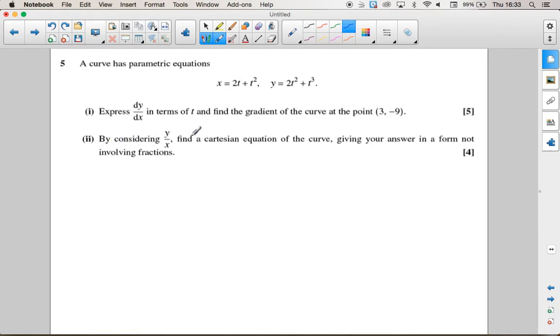So part 2, a different part of the question, says that by considering y over x, and we're looking for the Cartesian equation. Normally for the Cartesian equation we'd get one of these to say t equals and then substitute it into the other equation.